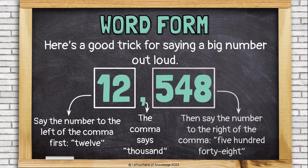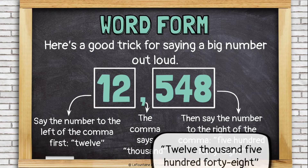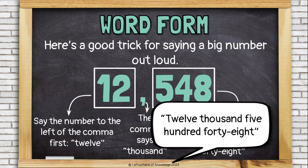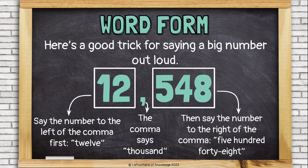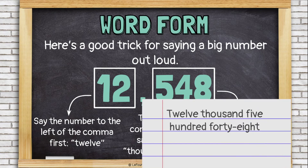Then say the number to the right of the comma: 548. Now put it all together — twelve thousand, five hundred forty-eight. And then write it: twelve thousand, five hundred forty-eight.